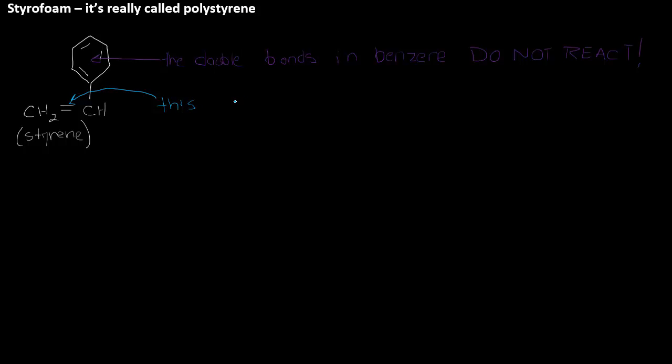Well, it's the double bond that sits here between the two carbons in what looks like the ethene part of the molecule. This is the double bond that's going to polymerize. So this is the only part of the molecule that changes.